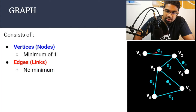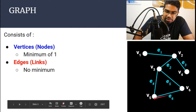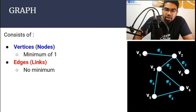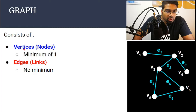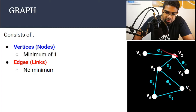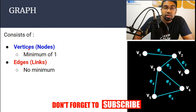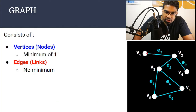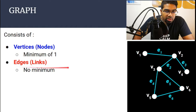We have 6 vertices here, and edges E1 until E6 — we have 6 edges as well. Edges connect vertices, so edges are also known as links or relations. Vertices are also known as nodes. So as long as there is one vertex, it can be considered a graph. That means there can be just one vertex without any edges and it is still considered a graph. There is no minimum number of edges; however, there needs to be at least one vertex.